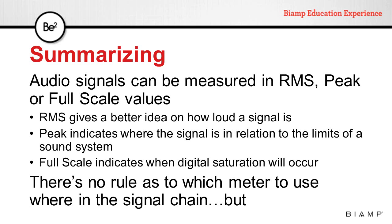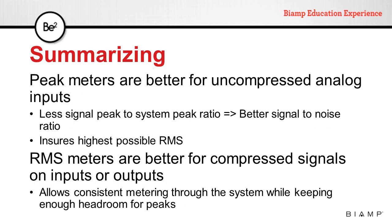There is no rule as to which meter to use at any given stage of a signal flow. But in general, peak meters are going to be better for uncompressed analog inputs. This will ensure a better signal-to-noise ratio, as we can keep a smaller ratio between signal peak and system peak levels. RMS meters are better for compressed signals, either on inputs or outputs, as they allow consistent metering throughout the system while keeping enough headroom for peaks.